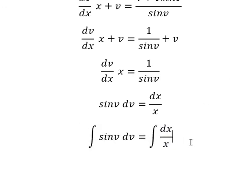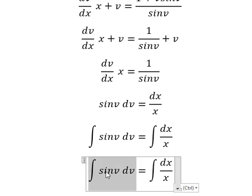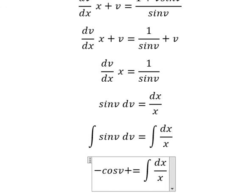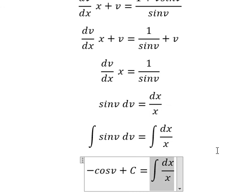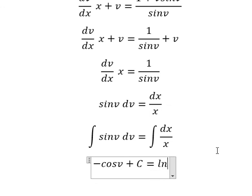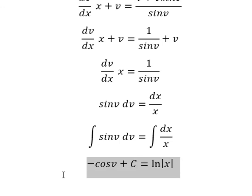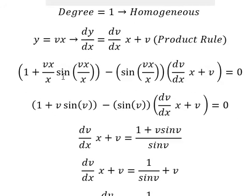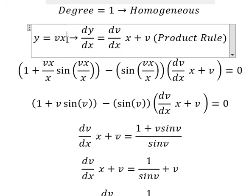So the integration of this one we have negative cos v, and I will put C. This one we have Ln of the absolute value of x. v is about this one.